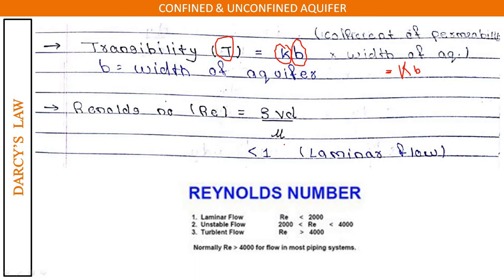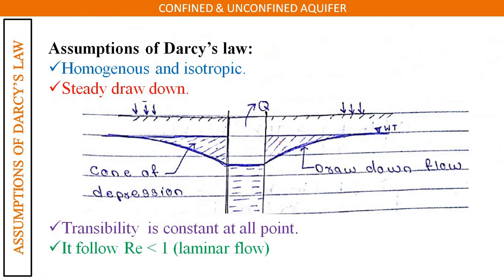Reynolds number: if Re is less than 2000 it is laminar flow; 2000 less than Re less than 4000 is unstable flow; Re greater than 4000 is turbulent flow. For Darcy's law we assume Re less than 1, which is laminar flow. Darcy's assumptions include: homogeneous and isotropic medium, steady drawdown, transmissibility constant at all points, and Reynolds number less than one.